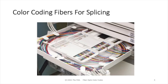Here's an example of a splice tray in a pedestal, where an incoming outside plant cable with 250 micron buffered fibers is spliced to 900 micron buffered pigtails. You can see on the left side the 250 micron buffered fibers, and on the right side the 900 micron buffered fibers. And if you look close, you'll see that there are 12 fibers, and they are in the same order as we showed in the color codes.